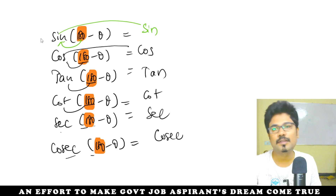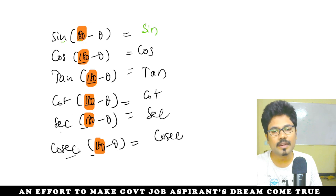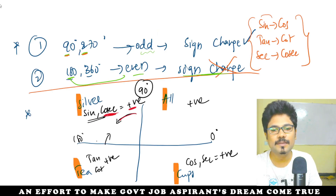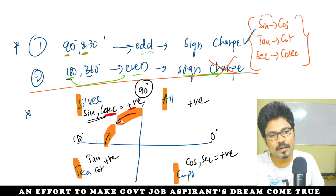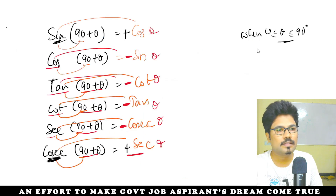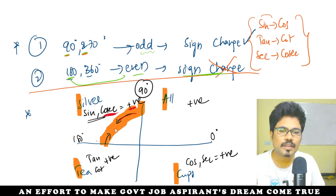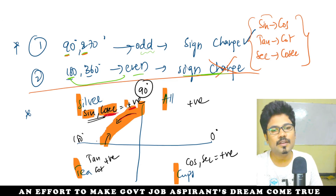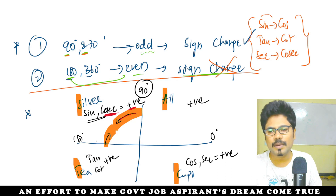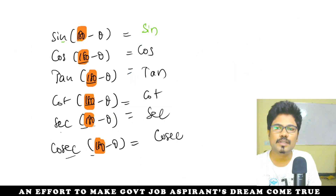For 180 minus theta: since theta is 0 to 90, 180 minus theta falls between 90 and 180 — the second quadrant. In the second quadrant, sin is positive and cos is negative. So sin(180 minus theta) is positive, cos(180 minus theta) is negative.